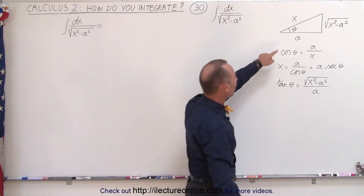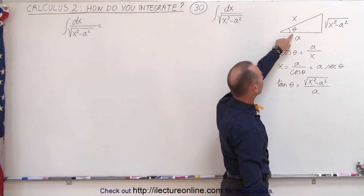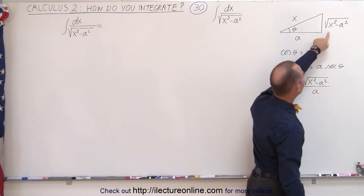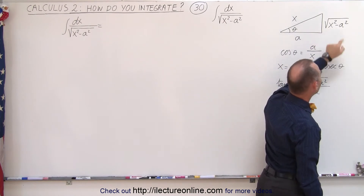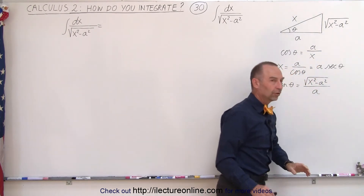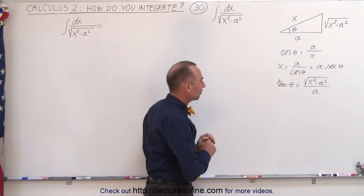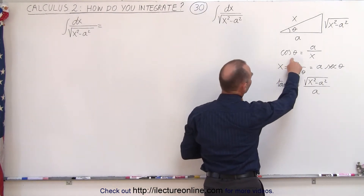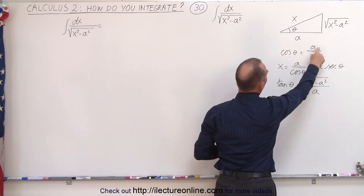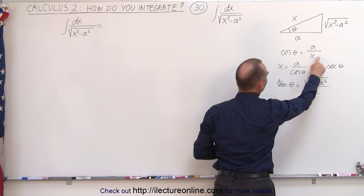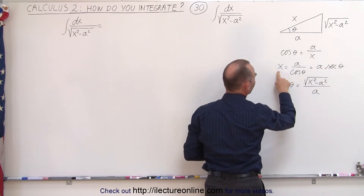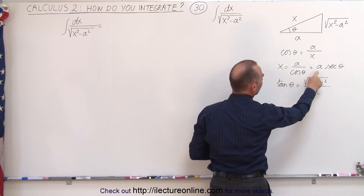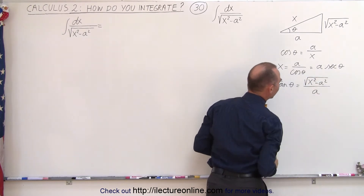The adjacent side to the angle theta is a, and the hypotenuse is x, and the opposite side has the square root of x squared minus a squared, so the trig substitutions will be just a little different. The cosine of the angle theta is equal to the adjacent side over the hypotenuse, which when we solve for x is equal to a over the cosine of theta, which is equal to a times the secant of theta.